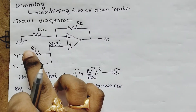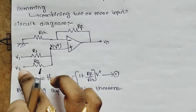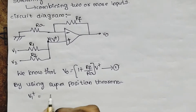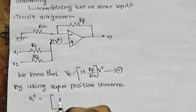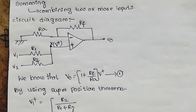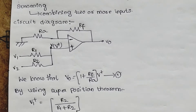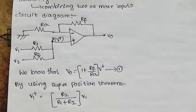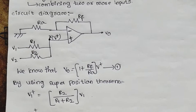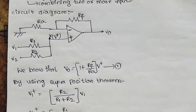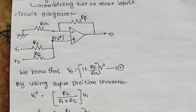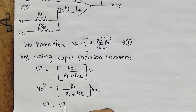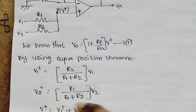Using the superposition theorem, we will consider V1 and V2 going to zero separately. Using the current division rule — R2 divided by the sum of resistances — we can solve for each contribution. When R1 equals R1 and R2 equals R2, the sum of the currents is the same. V+ is equal to V1 times R2 plus V2 times R1, all divided by R1 plus R2.